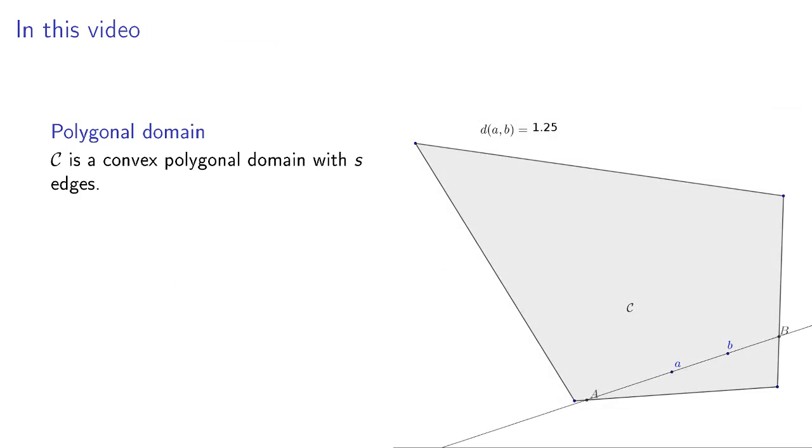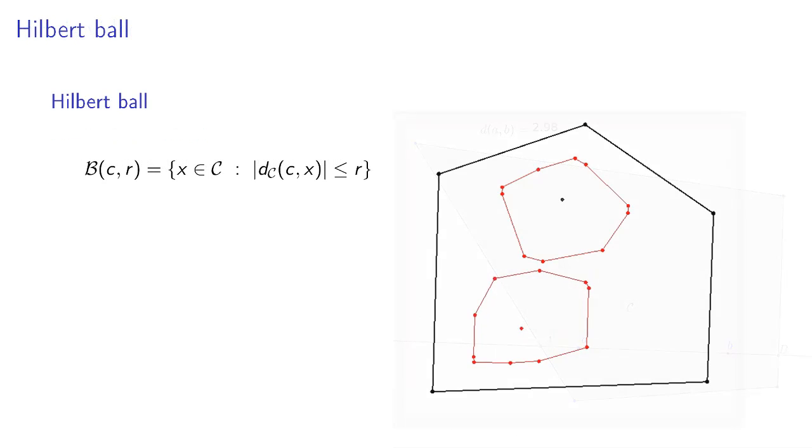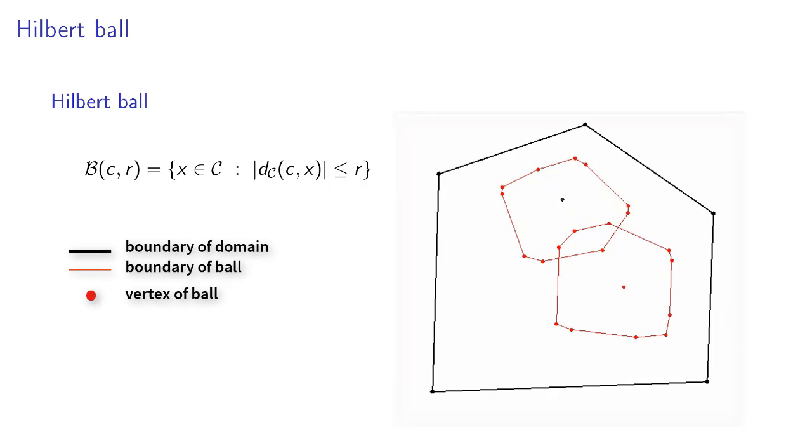In this video, we focus on Hilbert geometries defined on a convex polygonal domain with s edges. We will visualize and give properties on Hilbert balls, which we define as the set of points that have an absolute distance of at most r from a given center point.